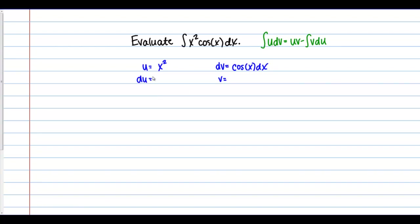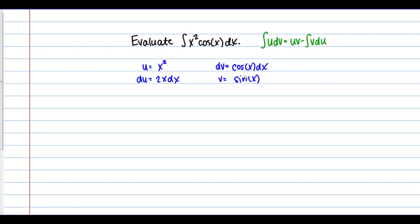As our next steps, we'll compute du and v. I compute du by taking the derivative of u, which gives me 2x dx. Then I compute v by integrating cosine of x dx, which gives me sine of x — we'll include the plus c in our final answer. Now applying the formula, the integral of x squared cosine of x dx equals uv, which is x squared sine x, minus the integral of v du, which is 2x sine of x dx.